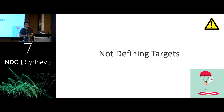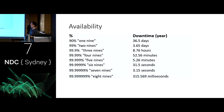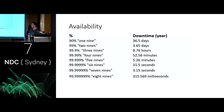The first anti-pattern I want to talk about is not defining targets — actually setting out how our system should behave and what it should cope with. When talking about reliability, a lot of people think in terms of availability, or the number of nines a system is available for. 90% availability over a year means there could be 36 days of downtime, which is probably unacceptable for most systems. I'd guess most companies sit somewhere between two and four nines. It's obviously dependent on what your application is.